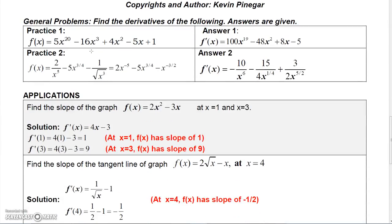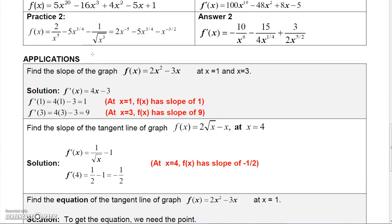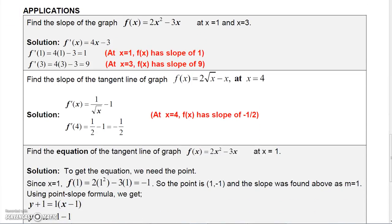The derivative of a function is simply the slope of the graph. If asked to find the slope at x equal 1 and x equal 3 for a function whose derivative is 4x minus 3: plug 1 into the derivative — 4 times 1 minus 3 equals 1, so the slope at x equal 1 is 1. Plug 3 into the derivative — 4 times 3 minus 3 equals 9, so the slope at x equal 3 is 9.